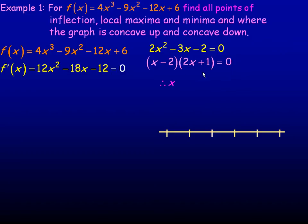We set each of those factors to 0. If we set x minus 2 to 0, we get x equals 2. If we set 2x plus 1 to 0, we bring the 1 over and divide by 2, giving us x equals negative 1 half. So those are the x-coordinates of our critical points.